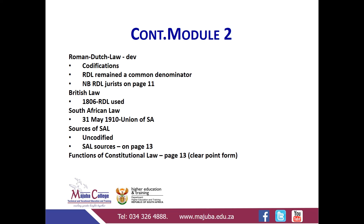Moving to British law. In 1806, the Roman Dutch law was then accepted by the British, because they were not happy about it at first. After the Voortrekkers had left the Cape and were practicing Roman Dutch law, in 1902 there was an Anglo-Boer War which took place between Britain and the two Boer Republics — the Free State and the Transvaal — and that war ended in 1902 with the Treaty of Vereeniging.